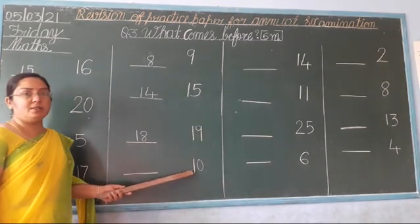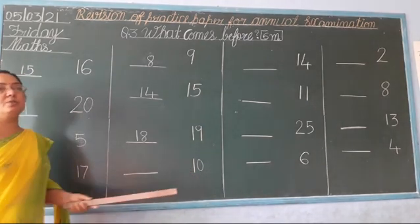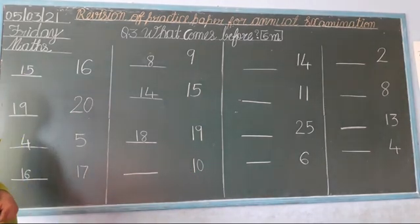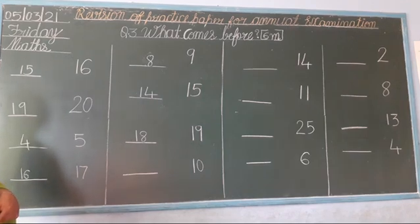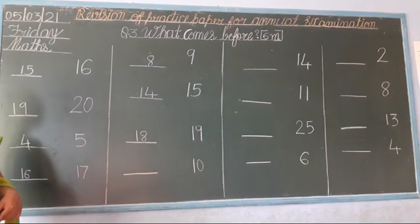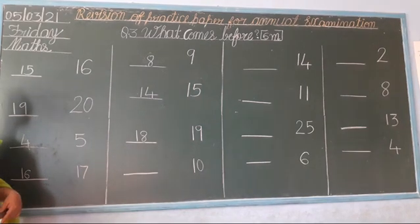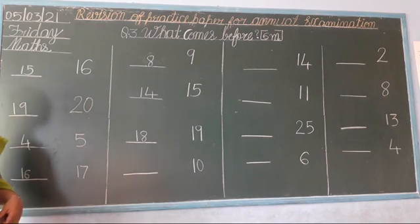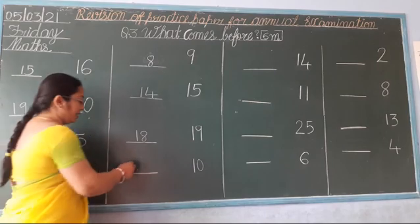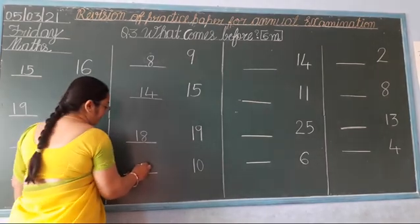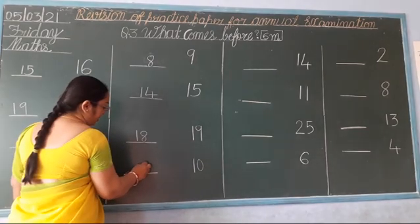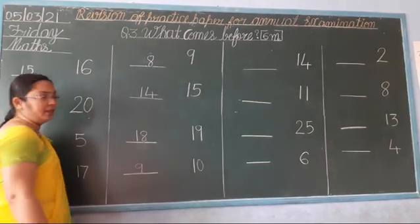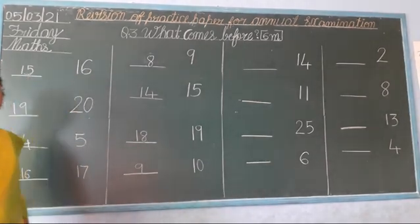Next: 1, 0 — 10. So you speak: 1, 2, 3, 4, 5, 6, 7, 8, 9, 10. Which number comes before? 9. So you write here: 9. Clear?